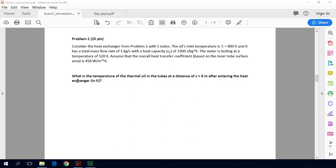This problem reads: consider the heat exchanger from problem one with five tubes. The oil's inlet temperature is 800 Kelvin, and it has a total mass flow rate of 1 kilogram per second, with a heat capacity of 2300 joules per kilogram Kelvin.